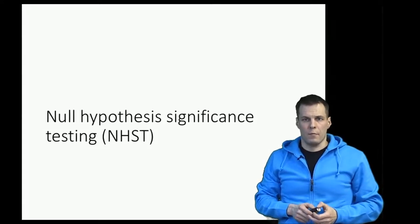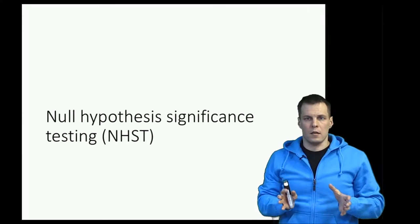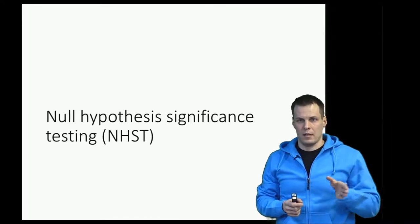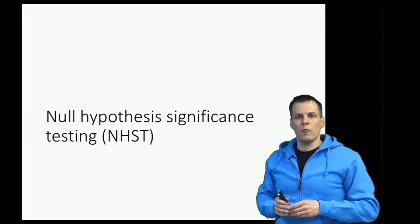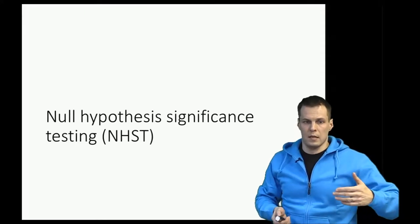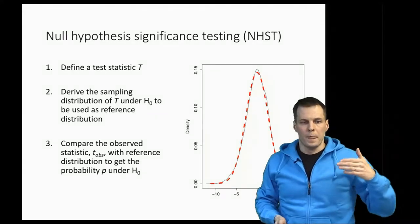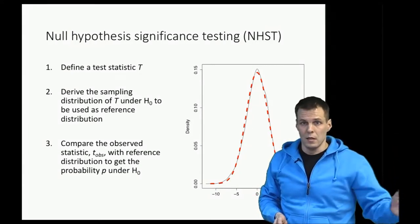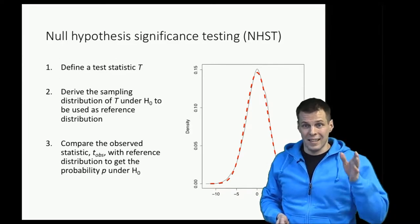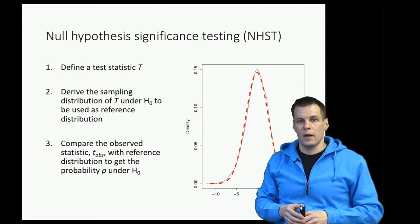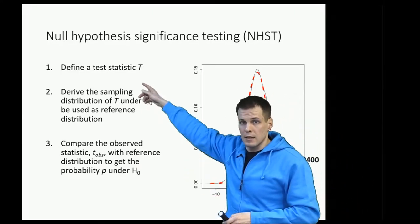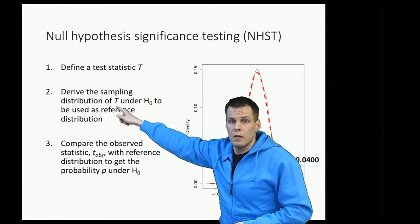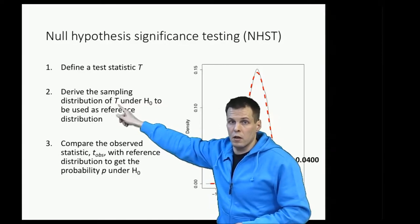We will now formalize the previous example and discuss the concept of null hypothesis significance testing, or NHST. The idea is that we start by defining an estimation problem that gives us an estimate, and we define two things: a test statistic and a null hypothesis. We call the test statistic T, and then we need to have the sampling distribution of T under the null hypothesis.